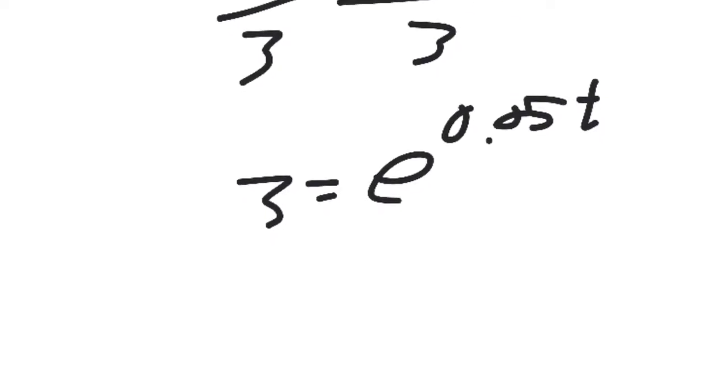Now you've got to get t by itself. And if it's stuck in the exponent position, use a log. It doesn't matter what log you take. So I'm going to use natural log because I remember, because I'm a nerd, that if you're taking a logarithm that has a base of the thing that is being raised to a power, basically a log base e of e is going to cancel out.